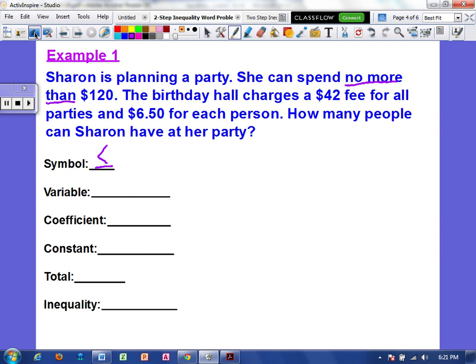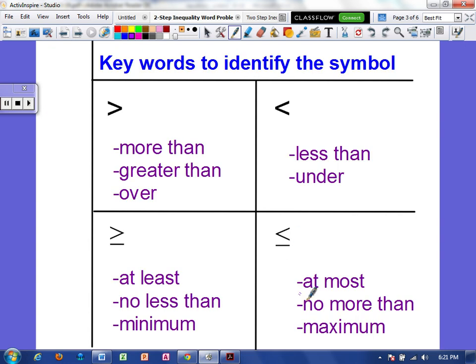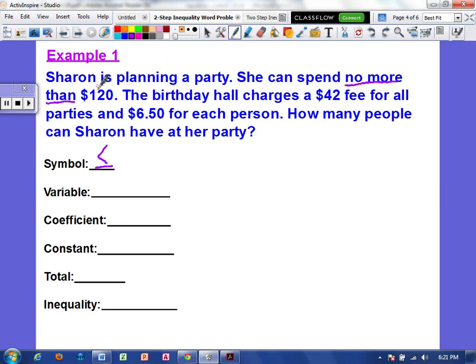And as you can see on the previous page, no more than was under our clue words for less than or equal to. Now, the variable is what the question is asking for, and it wants to know how many people Sharon can have. So I'm going to put a P for the variable.